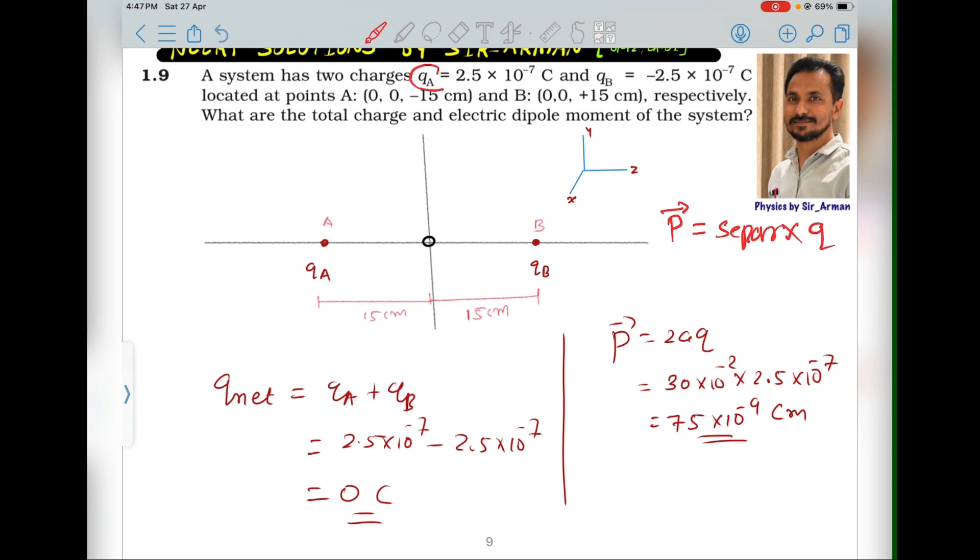It is given here that QA is located at (0, 0, -15). How have I drawn here? I have put the X direction like this. Here I have labeled X, which is coming out of this mobile device or from which you are watching—it is coming out of the plane of this device.